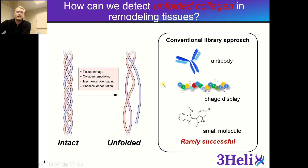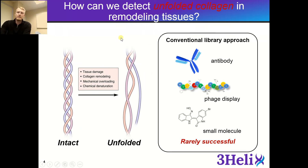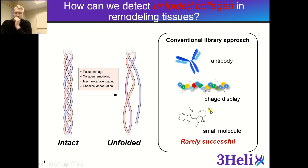The first thing we wanted to know is how can we detect unfolded collagen remodeling in tissues? Looking at this cartoon, we have an intact collagen molecule in a triple helical form, and upon tissue damage, collagen remodeling, mechanical overloading, or even chemical denaturation, this triple helix begins to unfold and unwind. Previously, researchers used indirect methods such as ELISA-type assays or zymography to capture and identify these smaller collagen strands. More recently, researchers have used more direct methods, including antibodies raised against them, small peptides derived from phage display, and small molecules produced for these target sites. However, these three methods have been rarely successful due to the fact that unfolded or denatured collagen does not present a defined 3D epitope that most targeting approaches use.